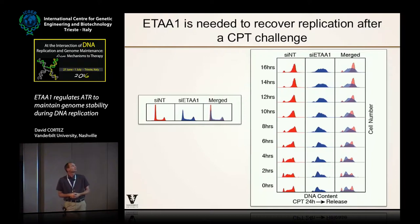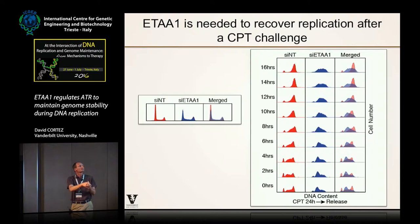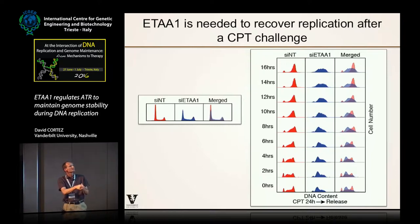So it's at stalled forks — but what is it doing? If one knocks down ETAA1, we see a mild change in the cell cycle, just a small increase in S and G2-phase cells. But if we treat cells with replication stress agents like camptothecin, we see dramatic effects. A control cell culture population treated with CPT for 24 hours and then released will finish replication in about 14 hours after the challenge. The ETAA1-deficient cells are obviously defective in that restart event and are destined to die. In three different CRISPR-Cas9 knockout clones, we see high sensitivity to camptothecin across a very large dose-response range.